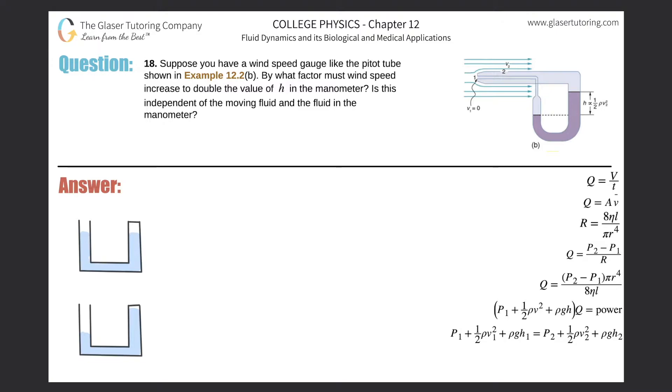Number 18, suppose you have a wind speed gauge like the pitot tube shown in example 12.2. By what factor must wind speed increase to double the value of height in the manometer? Is this independent of fluid?